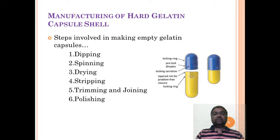Now next is manufacturing of hard gelatin capsule shell. Generally we need to manufacture both parts - cap and body separately. For manufacturing these two parts we follow six steps: dipping, spinning, drying, stripping, trimming or cutting and joining, and lastly polishing.